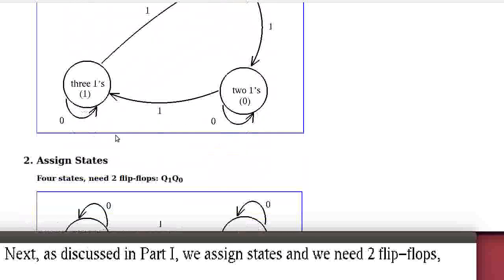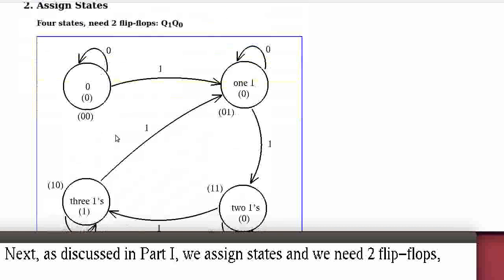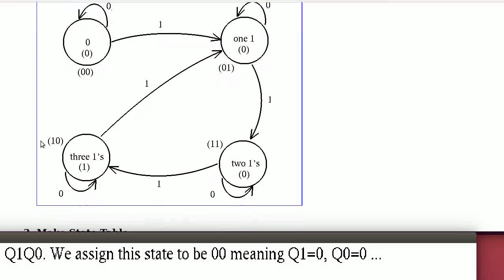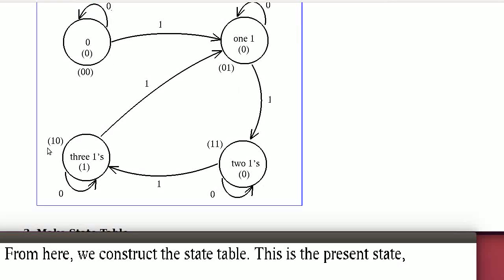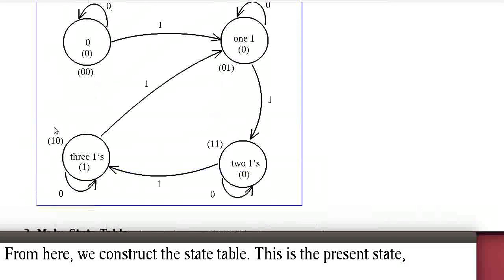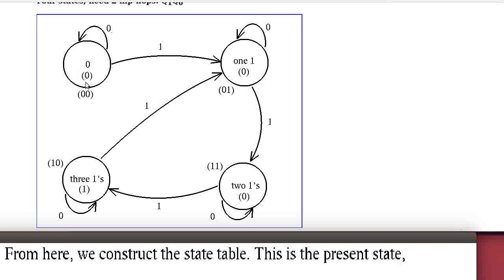As discussed in part 1, we assign states to the 4 states using two flip-flops Q1 and Q0. We assign state S0 as Q1Q0 = 00, S1 as 01, S2 as 11, and S3 as 10. From here we construct a state table. When the state is 00 with input 0, it goes back to itself (00); if input is 1, it goes to state 01. At state 01 the output is always 0 for a Moore machine, since the output depends only on the state, not the input.